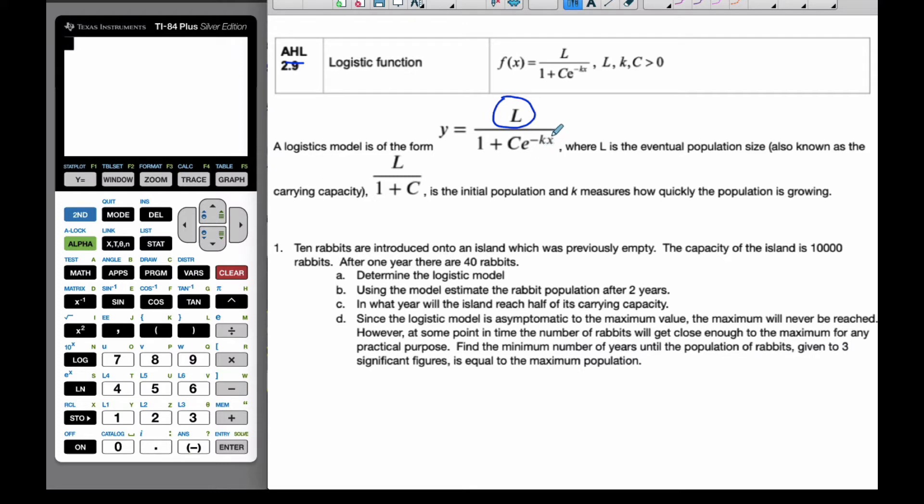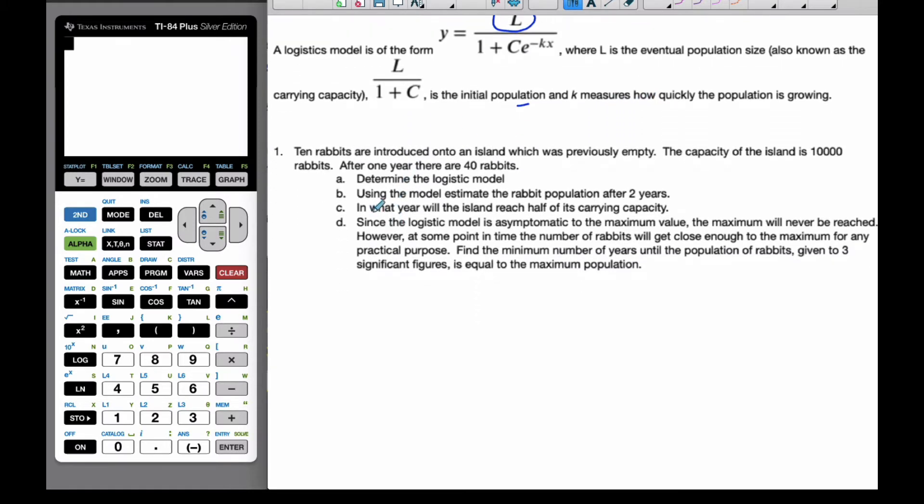If you let X be 0, which is the initial value, then you realize that L over 1 plus C is the initial population. And K measures how quickly the population is growing. It's the growth rate. So, trying a problem here, I have 10 rabbits are introduced on an island that was previously empty. The carrying capacity of the island is 10,000 rabbits.